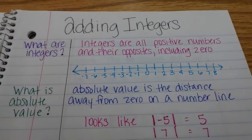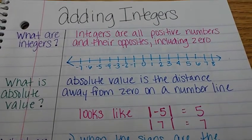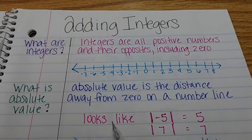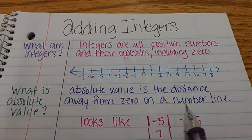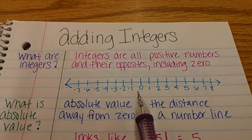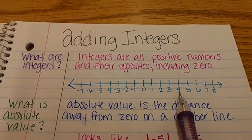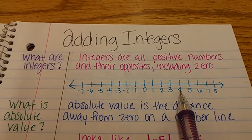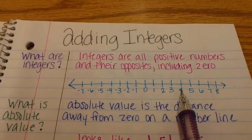So another vocabulary term is absolute value. What is absolute value? It is the distance away from zero on a number line. Well here's zero. So if I'm looking at four the distance away from zero to four is four. So the absolute value is four.